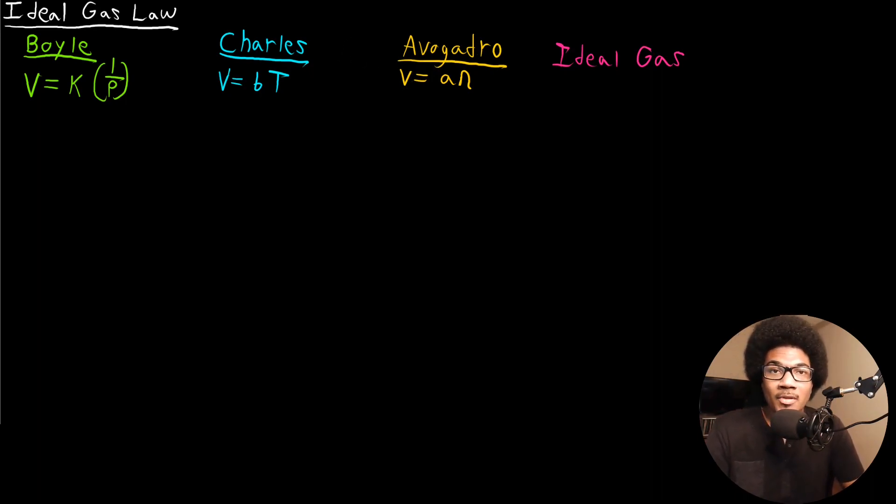It just so happens that gases that are at fairly normal pressures, atmospheric pressures, pretty low normal pressures, tend to follow these laws almost exactly. So we can use these laws in order to describe a wide array of gases fairly accurately.